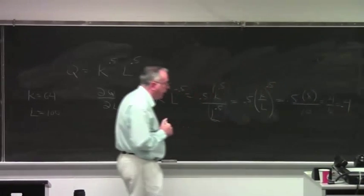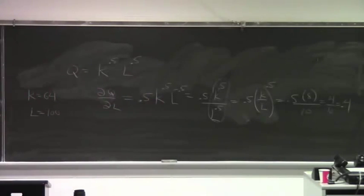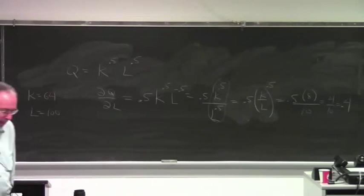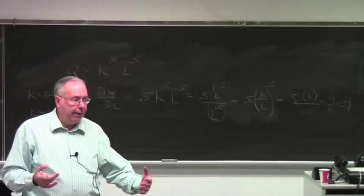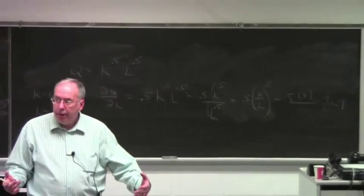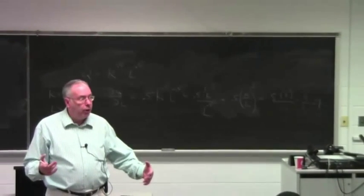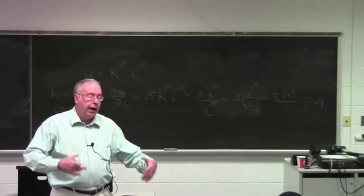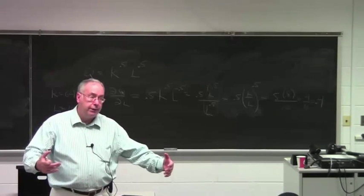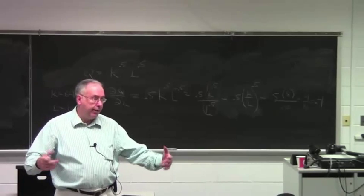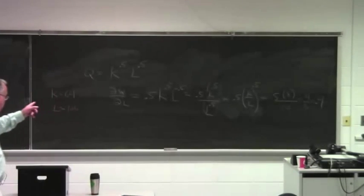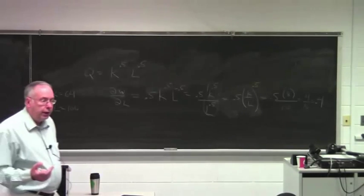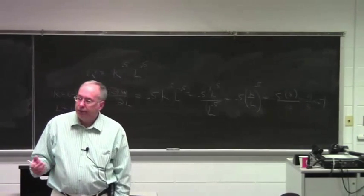So, the marginal product of labor is just 0.4. So, what this means is approximately, if you're currently using 64 units of capital, 100 units of labor, if you use one more unit of labor, your output will increase by 0.4 units. I say approximately, because the partial derivative is really the limit of the difference quotient, delta Q over delta L as delta L goes to 0.